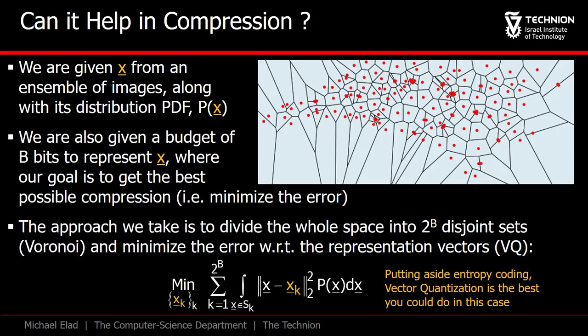By the way, you will observe that we chose to disregard the issue of entropy coding, which complicates things in this case. So yes, P of x is relevant for compression, too.